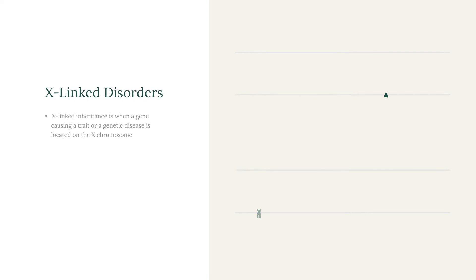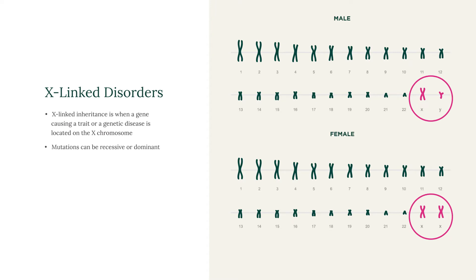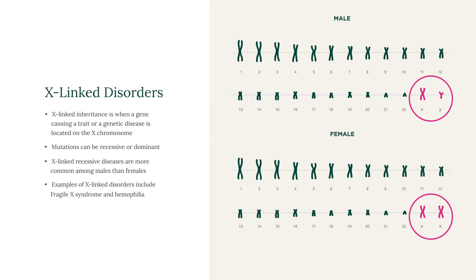X-linked inheritance is when a gene causing a trait or a genetic disease is located on the X chromosome. Mutations in genes on the X chromosome can be either recessive or dominant. A male with a mutation in a gene on the X chromosome is typically affected with the condition, because females have two copies of the X chromosome and males have only one. X-linked recessive diseases are more common among males than females. Examples of X-linked disorders include Fragile X and Haemophilia.